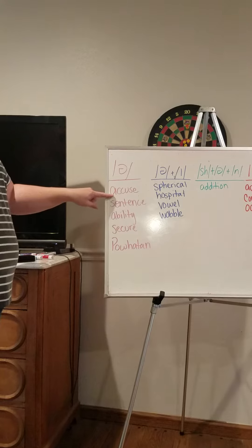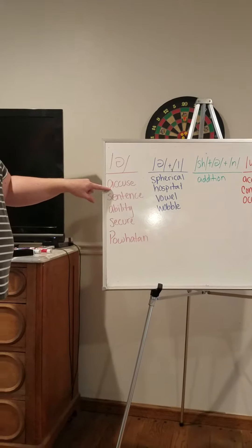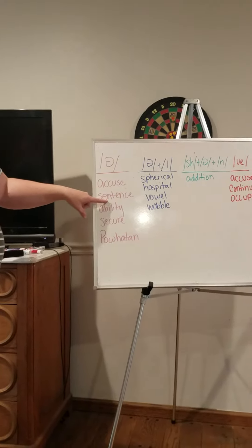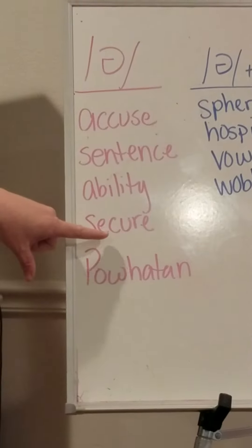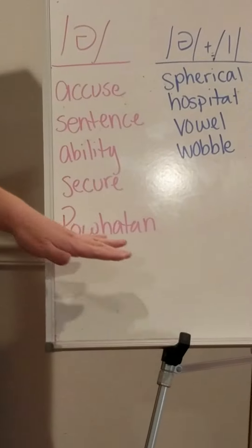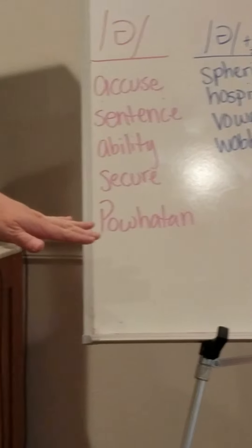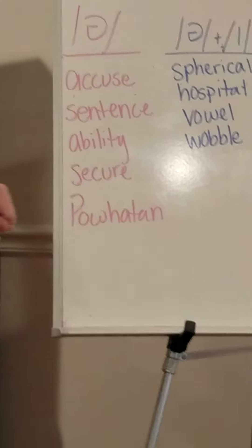So accuse, the A takes you with that. Sentence, the S sound. Ability is here. Secure, the S sound. And Manhattan is your content word for this week. It has the accent as well.